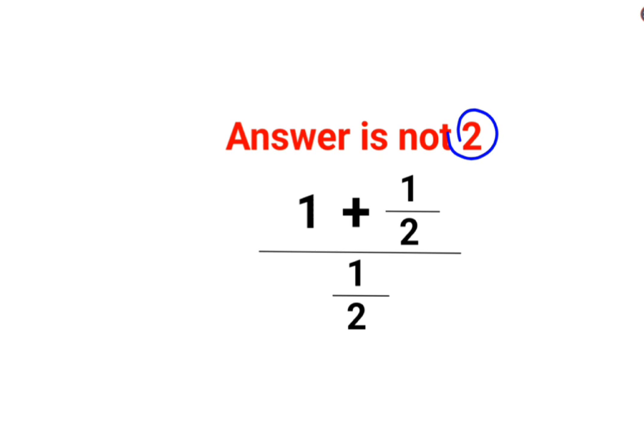See, 1 plus 1 by 2, over 1 by 2. So this and this gets cancelled, they are left with 1 plus 1, so answer is 2. No, that's not how these things work.